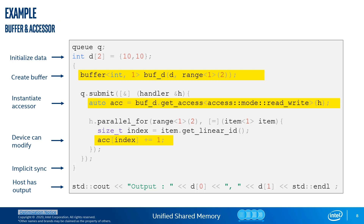Let's compare code written using the buffer abstraction model and USM. In the buffer implementation, we first create an array and initialize it. Then we need to create a buffer and instantiate an accessor in order to access the data from device code. We perform implicit synchronization by introducing a scope, so buffers are destroyed at that point and execution of the kernel is finished.